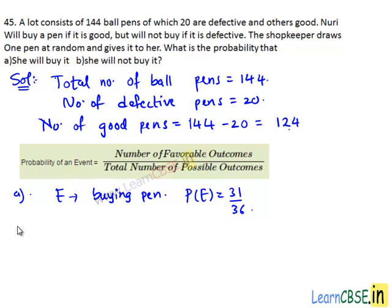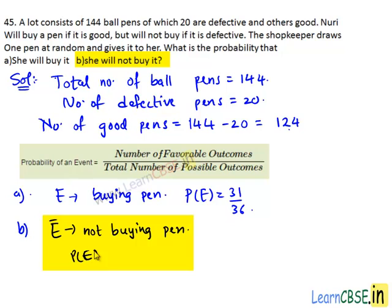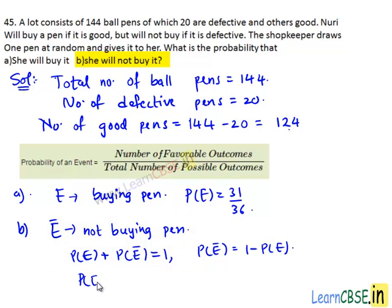Now let's see part B. Here we need to find the probability that she will not buy it. E-bar will be the event of not buying the pen. We have P(E) plus P(E-bar) equals 1, so P(E-bar) equals 1 minus P(E). Substituting the value of P(E), we get P(E-bar) equals 1 minus 31 divided by 36, which equals 36 minus 31 divided by 36, which is equal to 5 divided by 36.